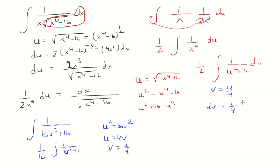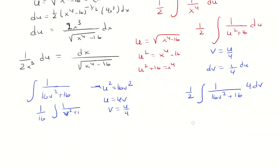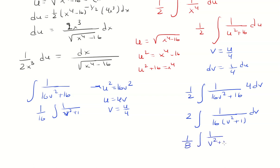So dv equals one-fourth du. We have one-half times the integral of 1 over u squared, where u squared equals 16v squared. And du equals 4 dv, so the 4 comes outside and multiplies the one-half to give 2. Factoring out the 16, we get 2 over 16, which becomes one-eighth times the integral of 1 over v squared plus 1, dv.